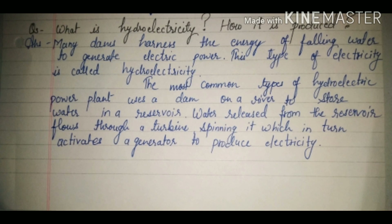Question three: what is hydroelectricity and how is it produced? Answer: many dams harness the energy of falling water to generate electric power, and this type of electricity is called hydroelectricity. The most common type of hydroelectric power plant uses a dam on a river to store water in a reservoir. Water released from the reservoir flows through a turbine — a kind of spinning blade — which in turn activates a generator to produce electricity.